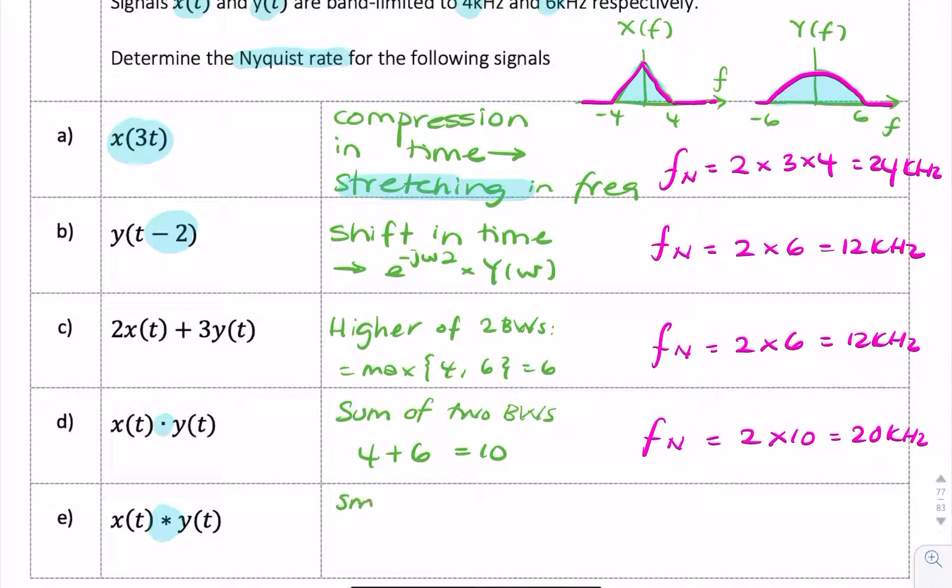So when convolving, the effective bandwidth of the convolution is the smaller, the lower of the two bandwidths. So you'll want the minimum of 4 and 6 kilohertz, and the minimum of the two in this case is 4, the bandwidth of X. So the Nyquist rate would be 2 times 4 equals 8 kilohertz.